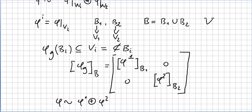So this is the matrix form. And phi is equivalent to the direct sum of these two sub-representations.